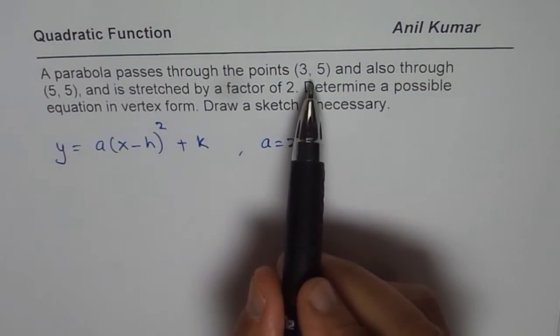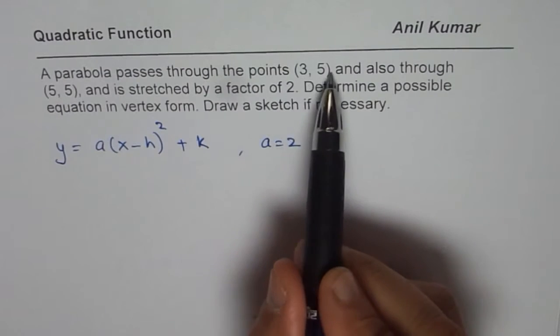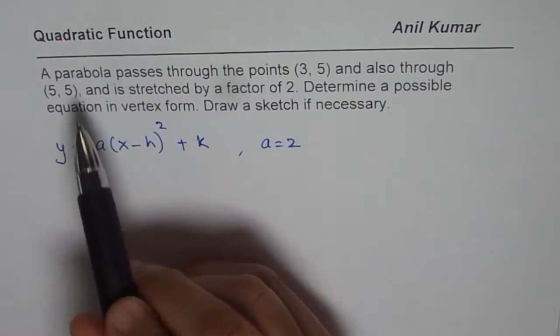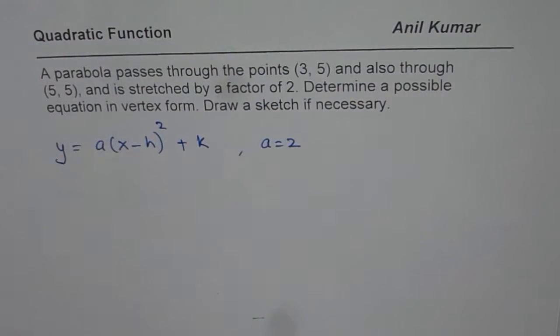That is given to us. And we are given one more information. That is, it passes through two points (3, 5) and (5, 5). How does that help you to find the equation? This is what you have to think. So, you can pause the video now. Answer the question and then look into my suggestion.